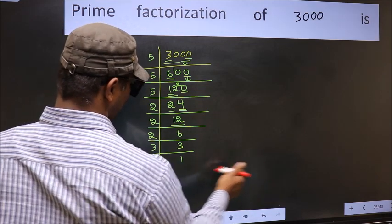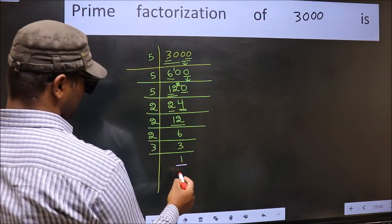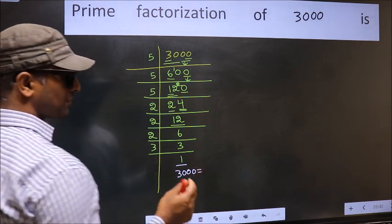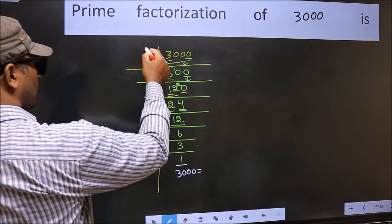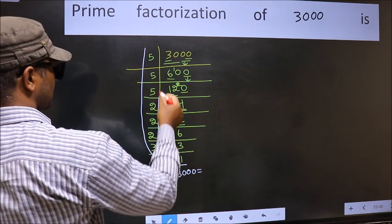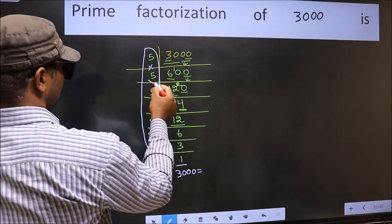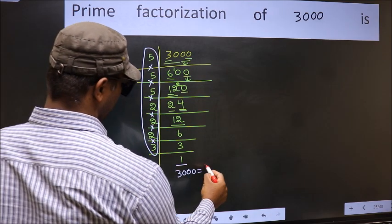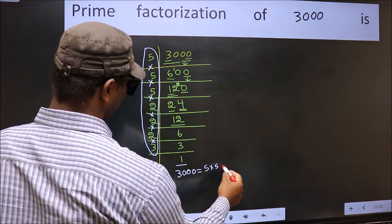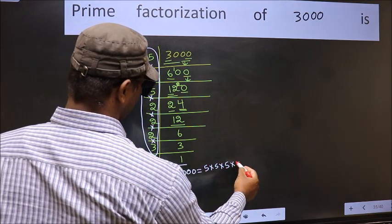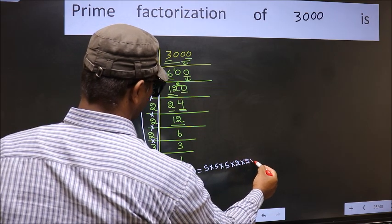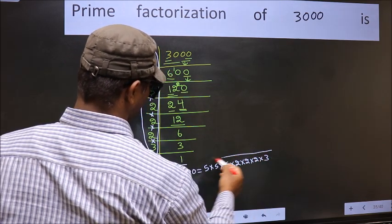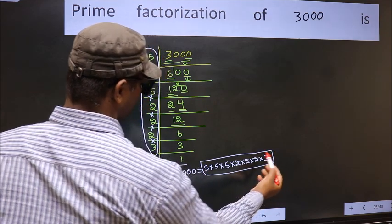So we got 1 here. So the prime factorization of 3000 is the product of these numbers: that is 5 into 5 into 5 into 5 into 2 into 2 into 2 into 2 into 3. This is the prime factorization of 3000.